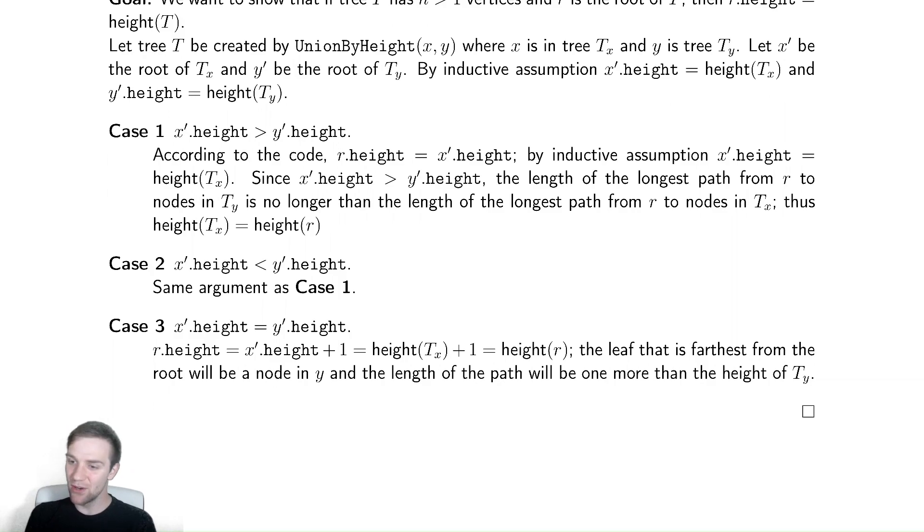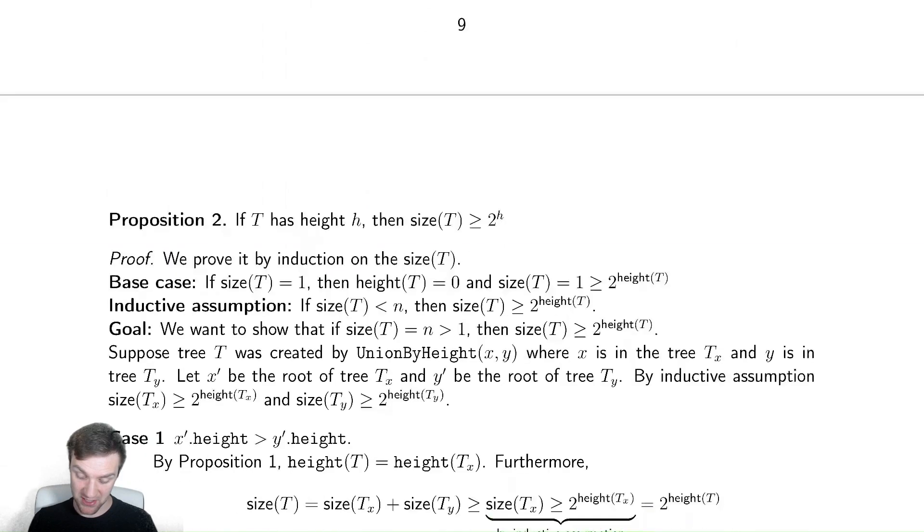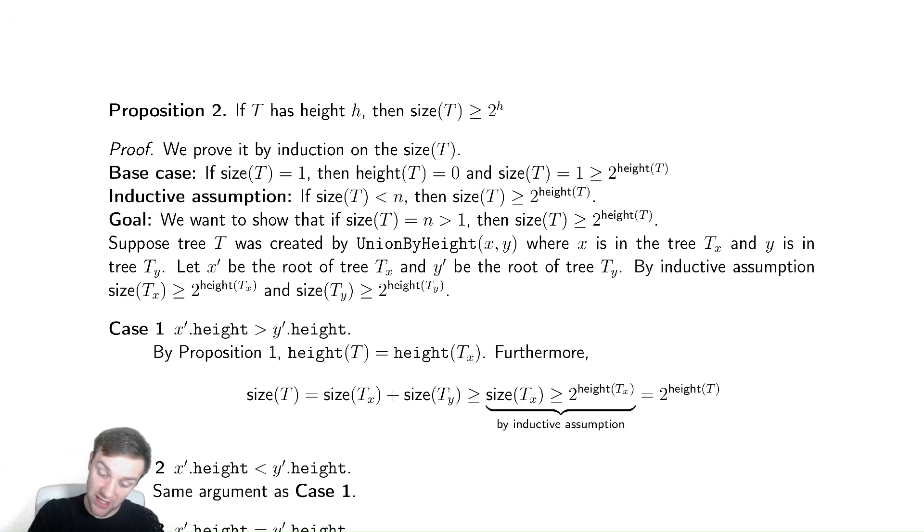And whatever node was causing y prime's tree to have a height of height of ty would necessarily have increased its height by one because we added one more edge to get to the root, because we updated what the root was. This theorem will be useful though because we're going to want to use x prime dot height and y prime dot height interchangeably when we're understanding the runtime in our next proposition.